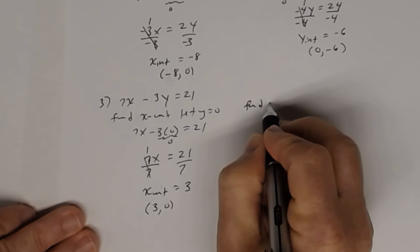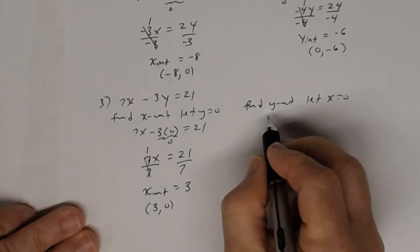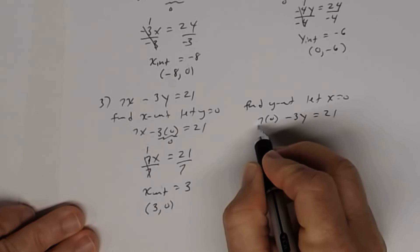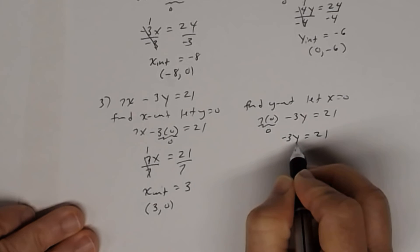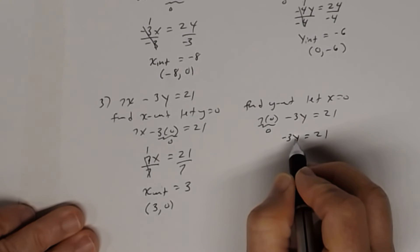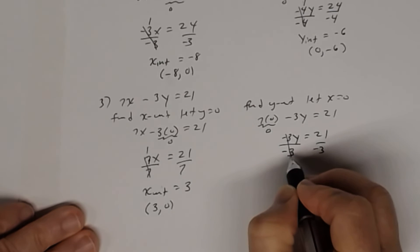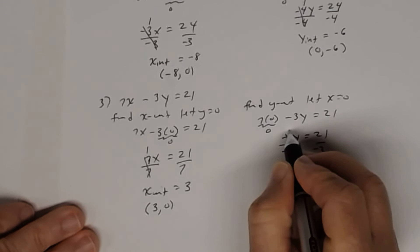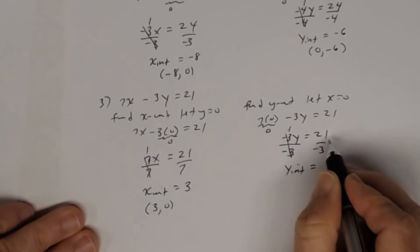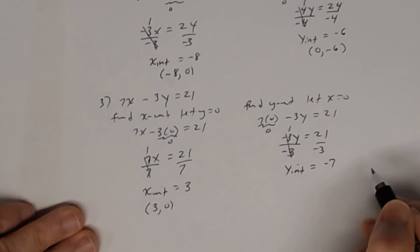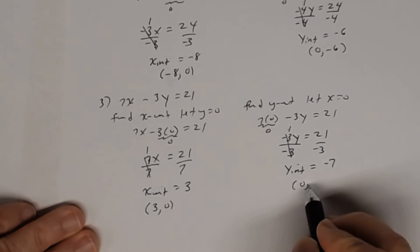To find the y-intercept, we let x equal 0. So I get 7 times 0 minus 3y equal 21. 7 times 0 is 0, so 0 minus 3y is negative 3y equal 21. The coefficient of y is negative 3, and the opposite of multiplication is division. So I divide both sides by negative 3. Negative 3 divided by negative 3 is 1, and 21 divided by negative 3 is negative 7. As an ordered pair, x is 0 and y is negative 7, so 0, negative 7.